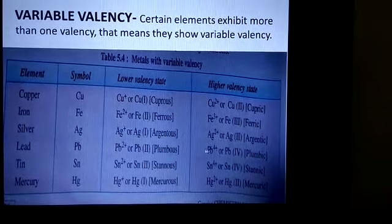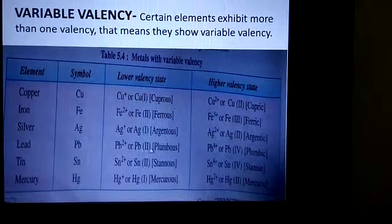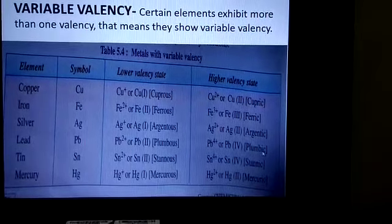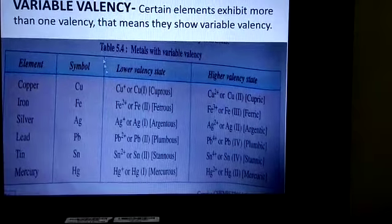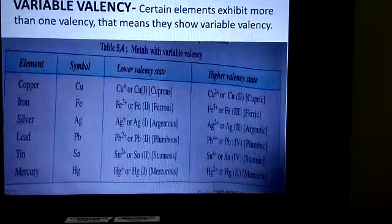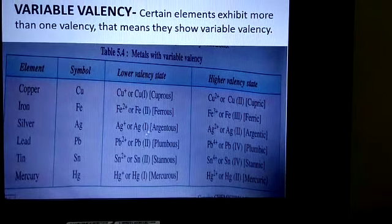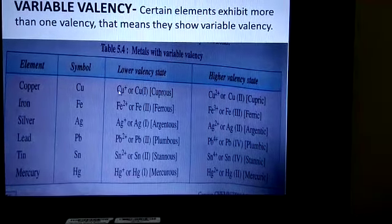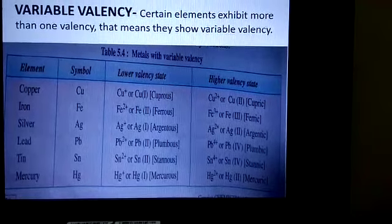Similarly with lead, +2 valency and +4 valency. When it shows +2 it's plumbous, and when it shows +4 valency, plumbic. Once again I am saying students, valency always depends upon the valence electrons, means the electrons which are present in the last shell of an atom. Or we can say the valency depends upon the electrons which are being shared between 2 atoms during a chemical reaction.